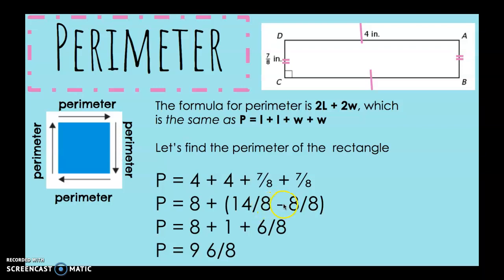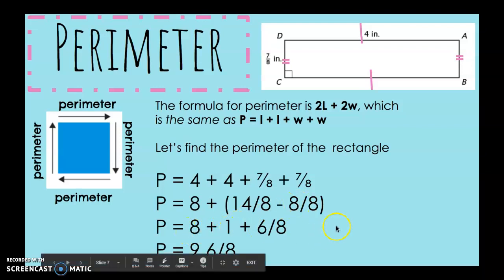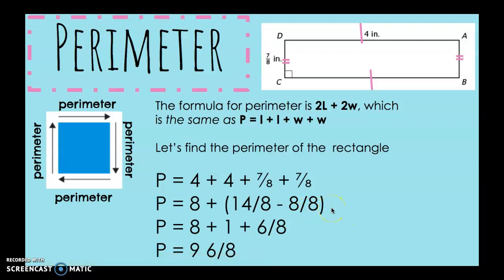So, we're going to subtract one whole, or 8/8, to reduce this fraction. Now, we're going to add 8 + 1, which gives us 9, and then we're going to add 6/8. So, the perimeter of this shape is 9 and 6/8.